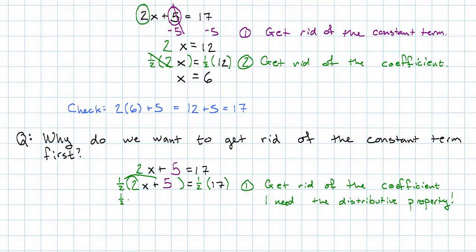So I'll have one half times 2x, but also one half times 5. And over on the right, one half times 17, well, that's 17 halves. The one half and the two do still cancel out. But now I have a half times 5, so I'm going to have 5 halves equals 17 halves.